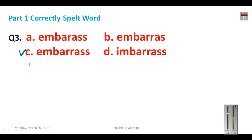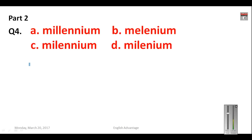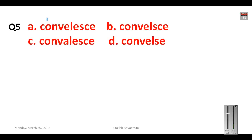Question number four: 'millennium' — also an extremely important question and a double-letter word. The correct spelling is M-I-L-L-E-N-N-I-U-M. So here your answer will be A.